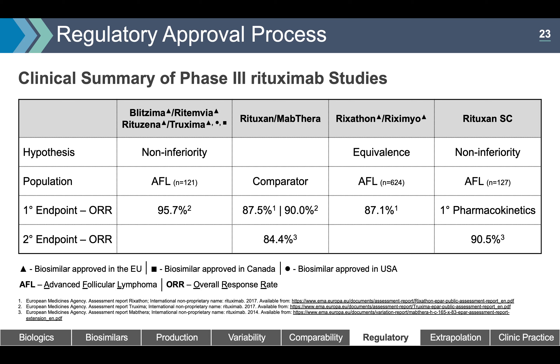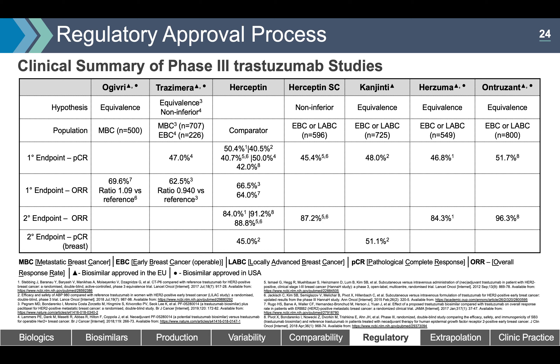For trastuzumab Phase 3 clinical trials, biosimilar trastuzumab has been studied in both early and metastatic breast cancer. All studies have been equivalence studies except one non-inferiority study for Trazimera, conducted for a non-medical reason — a change in process requested by the FDA. All studies are deemed to have met the statistical endpoint of equivalence or non-inferiority. Note the pathologic complete response rate of 40–50% across all early breast cancer trials, and overall response rate in the mid-to-high 60s in metastatic breast cancer, all demonstrating comparability.